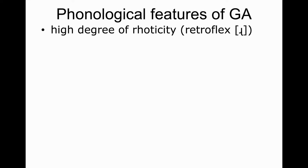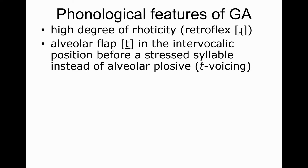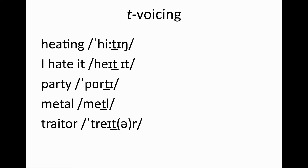First of all, General American is rhotic. That means that the sonorant R is realized as a post-alveolar approximant and is pronounced in every position. Another salient feature of General American is T voicing. Normally, the sound T is realized in intervocalic position as a brief voiced flap, when it follows a stressed vowel. You can hear it both within a word and also across word boundaries. For example, 'hitting' and 'I hate it', which are not pronounced as 'hitting' and 'hated'.